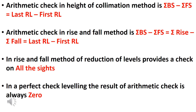In the line of collimation method, we will do an arithmetic check. The formula is: Sigma BS minus Sigma FS equals last RL minus first RL, where BS represents backsight, FS is foresight, and RL is reduced level.